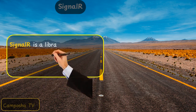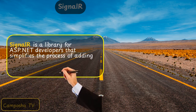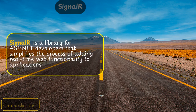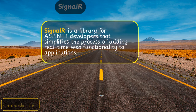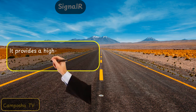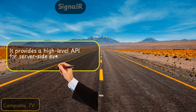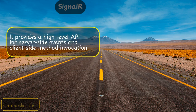SignalR is a library for ASP.NET developers that simplifies the process of adding real-time web functionality to applications. It provides a high-level API for server-side events and client-side method invocation.